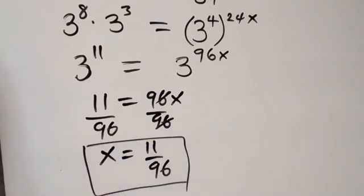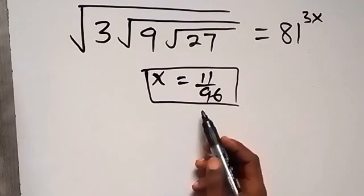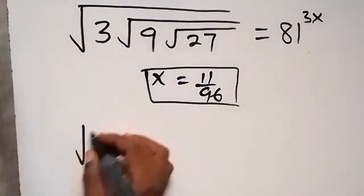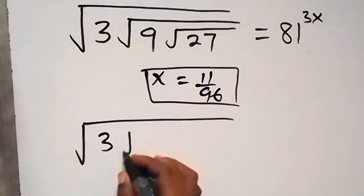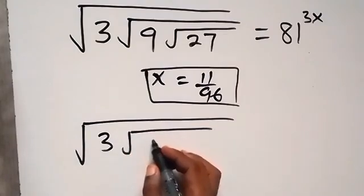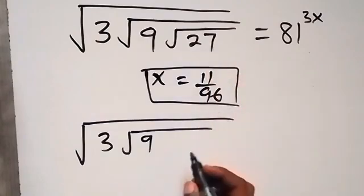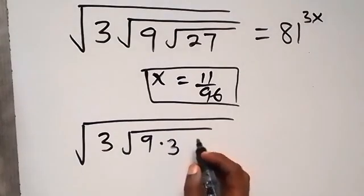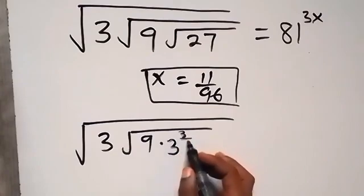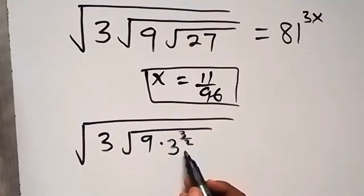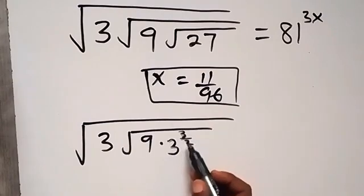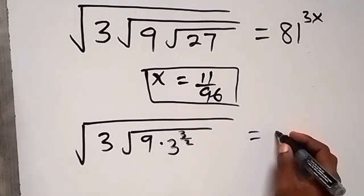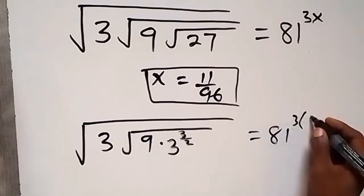To check if this value of x is correct, let's substitute it back. On the left we have root 3, then root 9, then root 27. Now root 27 is 27 raised to power half, and 27 can be expressed as 3 raised to power 3, so that becomes 3 raised to power 3 over 2. On the right we have 81 raised to power 3 times 11 over 96.